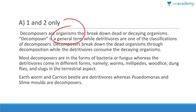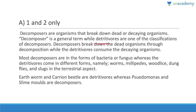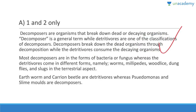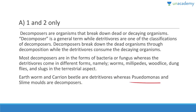Decomposers are organisms that break down dead or decaying organisms — it is a general term. Detritivores are a classification that break down dead organisms through decomposition by consuming the decaying organisms. Earthworms and carrion beetles are detritivores — they consume the decaying organisms. Pseudomonas and slime molds are decomposers — they merely break down organisms without consuming them.